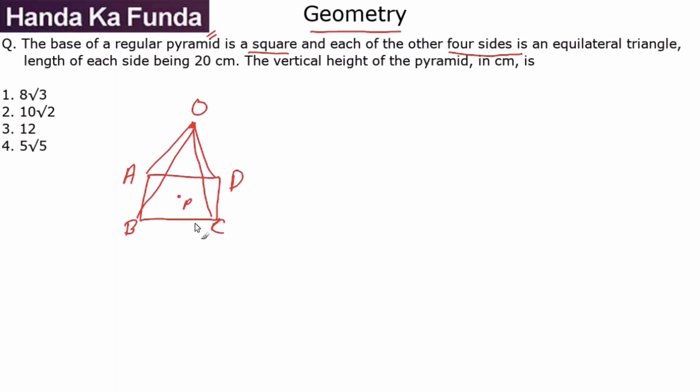So this is what my figure is where all sides - the base is a square that is 20. All of these sides are equilateral triangles, so they are also 20.